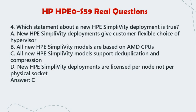Question 4: Which statement about a new HPE SimpliVity deployment is true? a. New HPE SimpliVity deployments give customers flexible choice of hypervisor. b. All new HPE SimpliVity models are based on AMD CPUs. c. All new HPE SimpliVity models support deduplication and compression. d. New HPE SimpliVity deployments are licensed per node, not per physical socket. Answer: c.